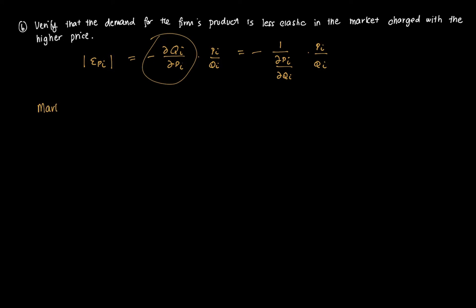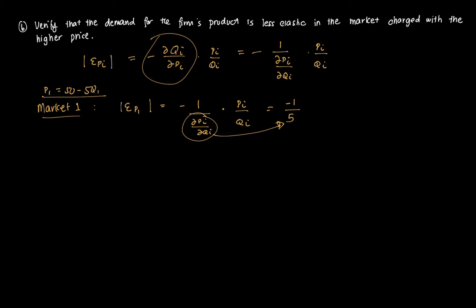Since we have an inverse demand function — P as a function of Q — we rewrite elasticity as negative one over (partial Pi over partial Qi) times Pi over Qi. For market one, the demand function is P1 equal to 50 minus 5Q1, so the partial derivative with respect to Q1 is negative 5. Plugging in P1 equals 30 and Q1 equals 4 gives elasticity EP1 equal to 1.5.